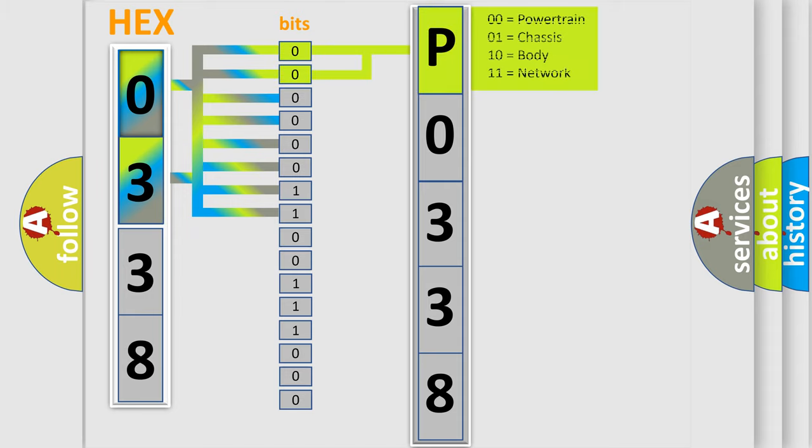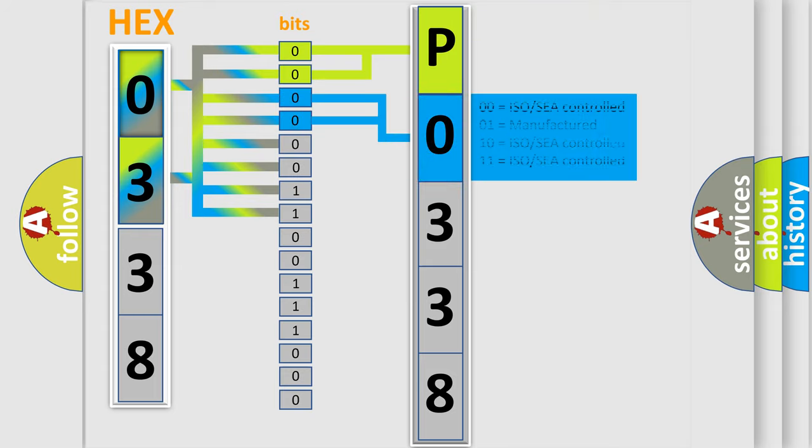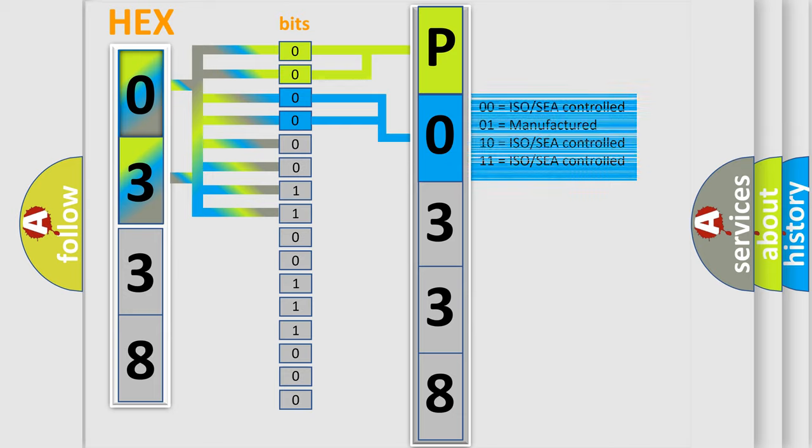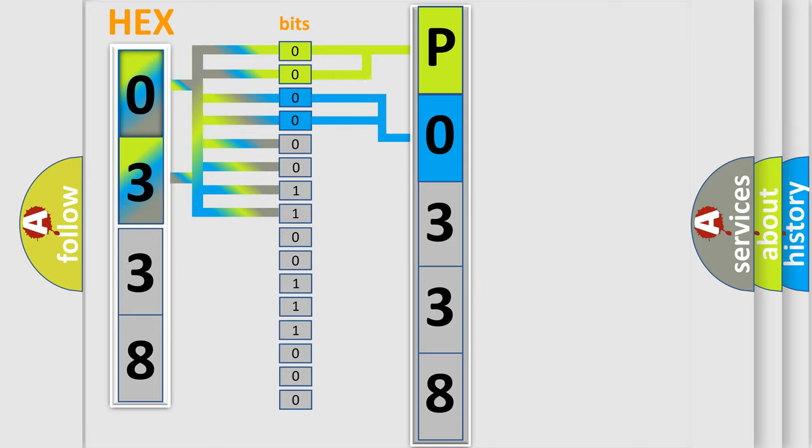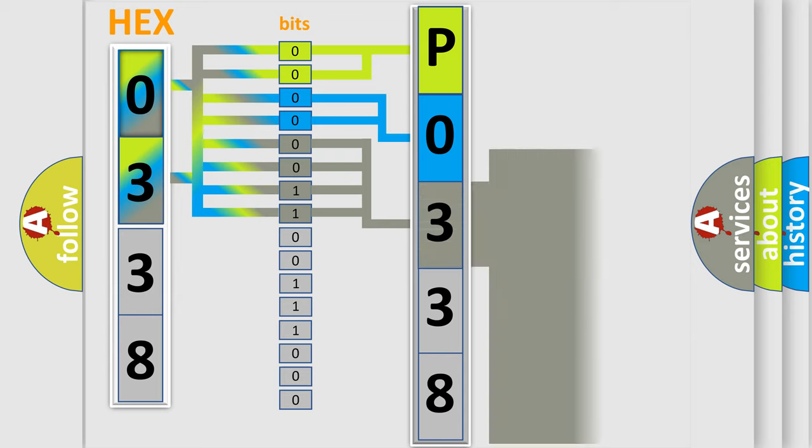By combining the first two bits, the basic character of the error code is expressed. The next two bits again determine the second character. The last bit styles of the first byte define the third character of the code.